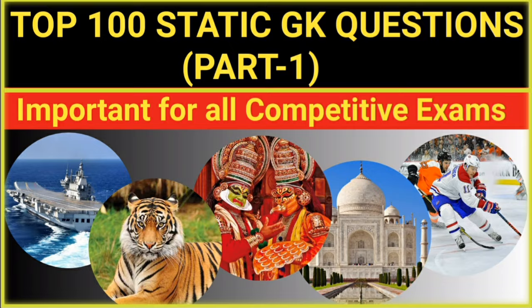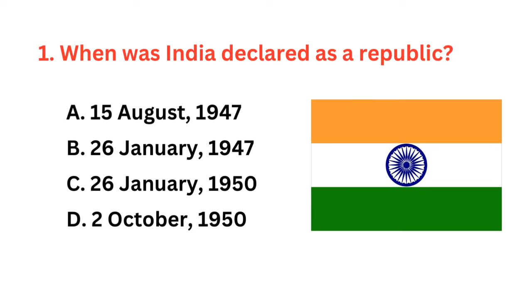When was India declared as a republic? The correct answer is option C: the 26th of January, 1950.